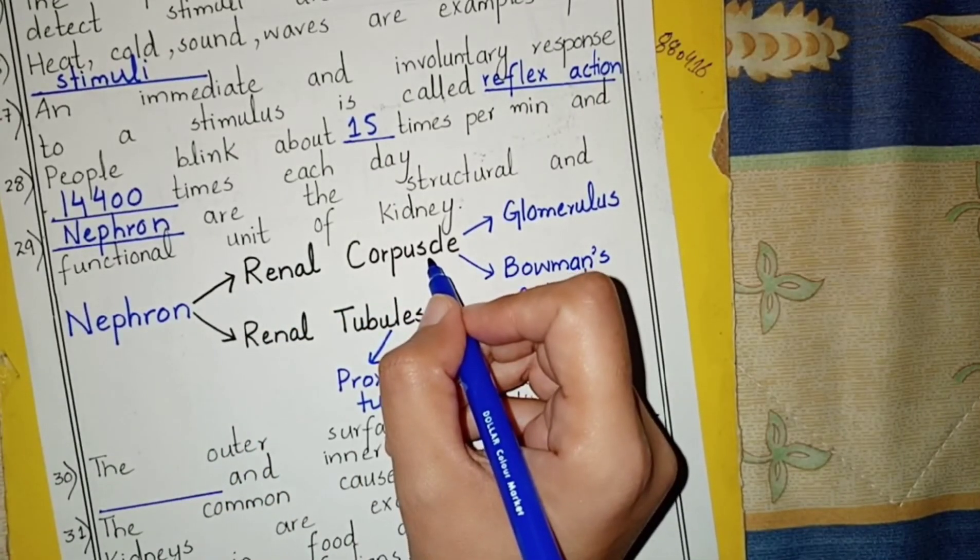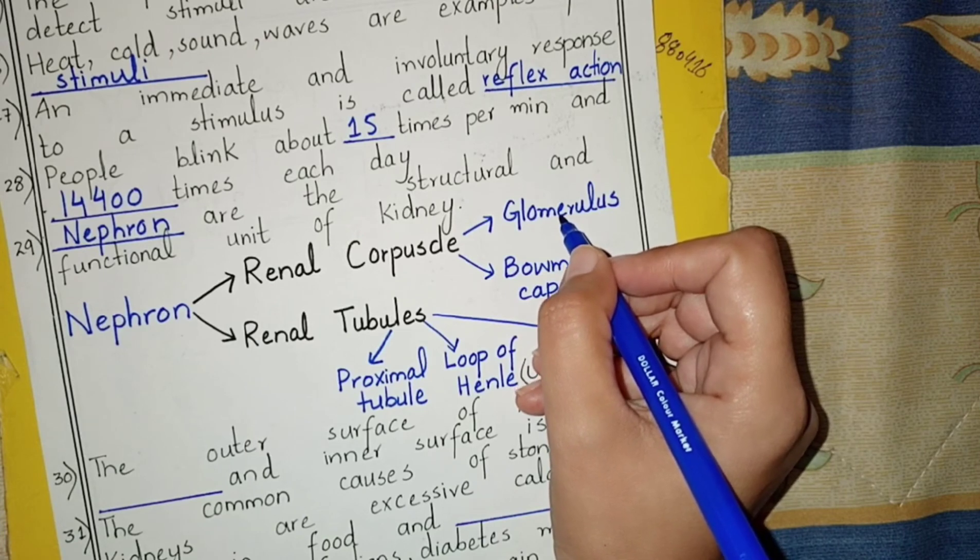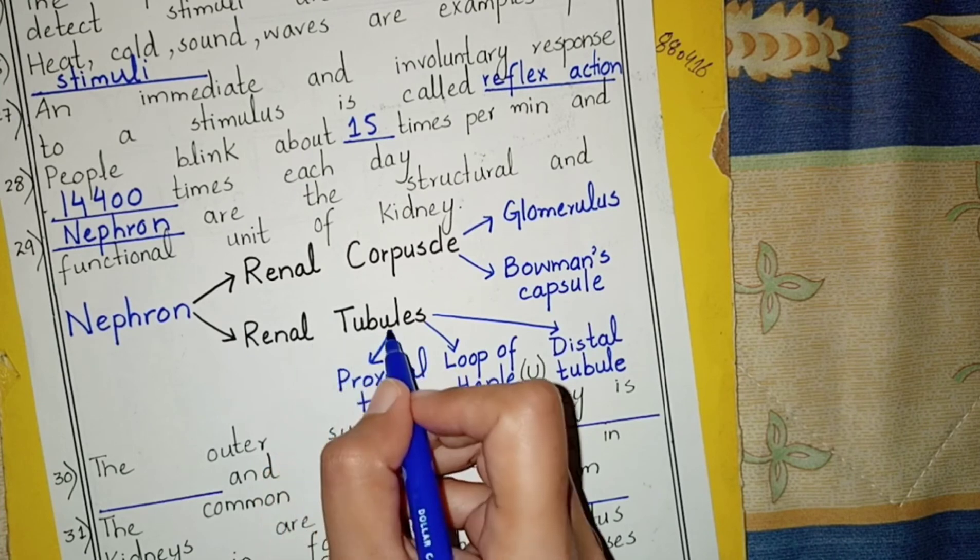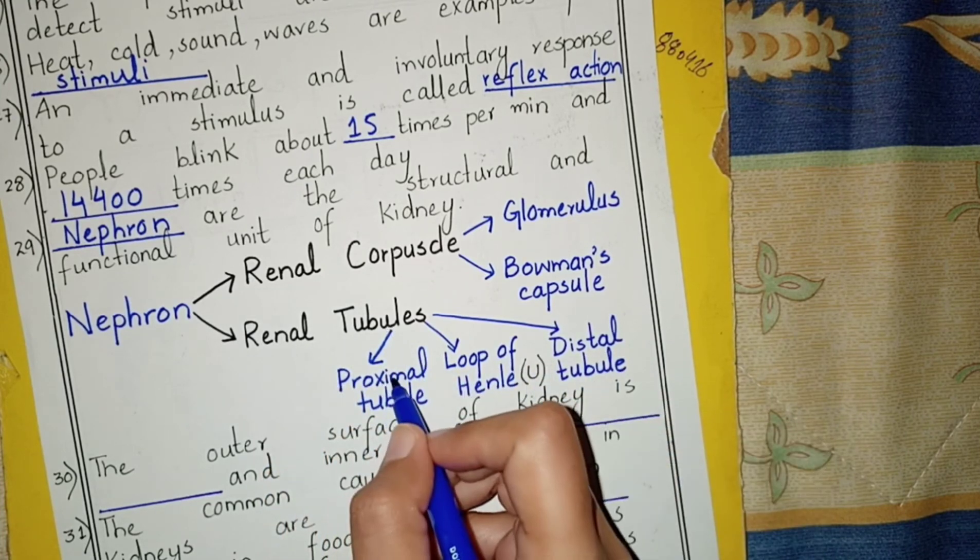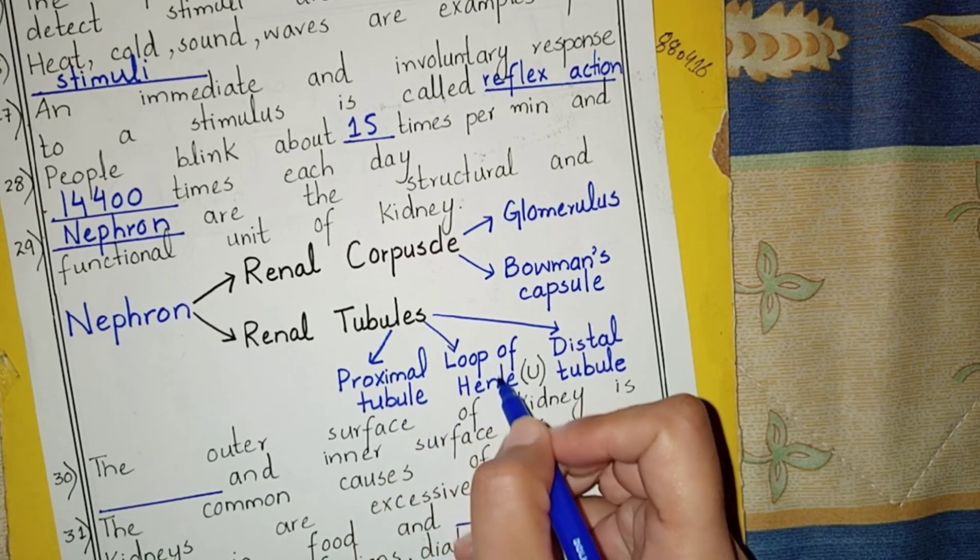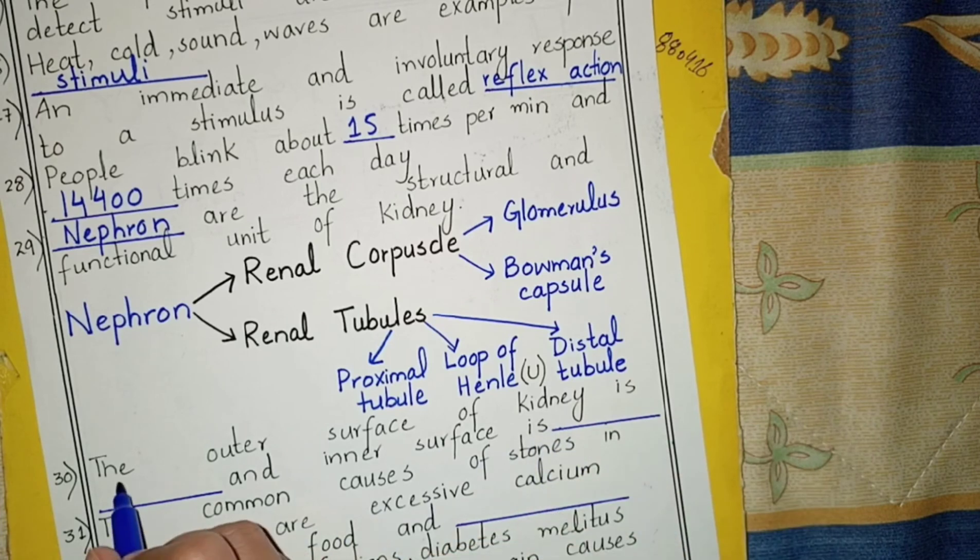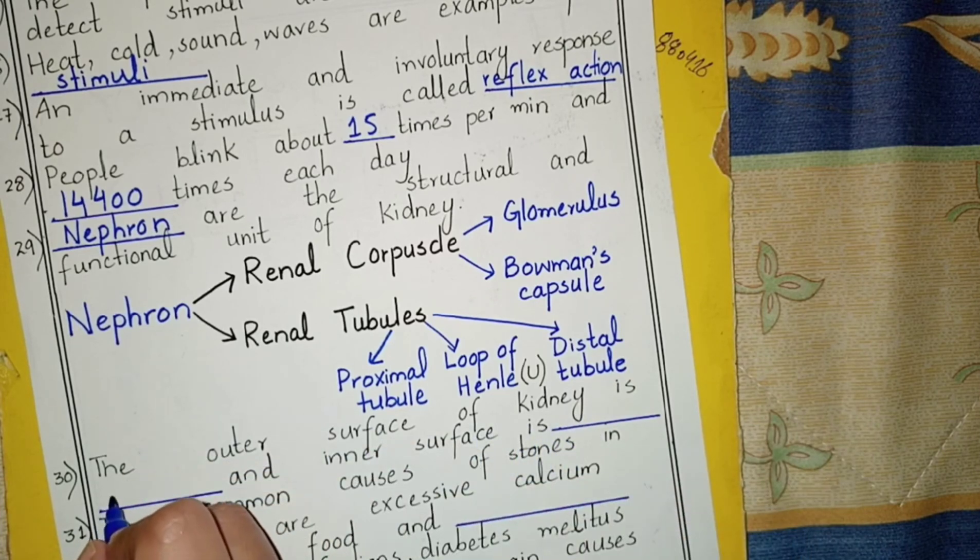The renal corpuscle is further divided into two parts: glomerulus and Bowman's capsule. The renal tubules consist of proximal tubule, loop of Henle (which is U-shaped), and distal tubule.